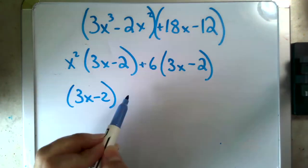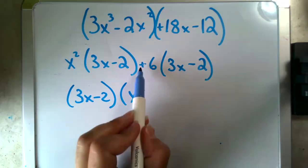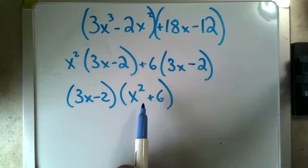And what's left of this term, when I factor out 3x minus 2 is x squared, and what's left of this term is plus 6, and that is the fully factored term. Now, before we move on, I want to take a quick look here.